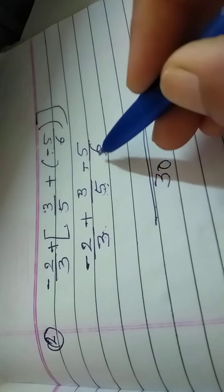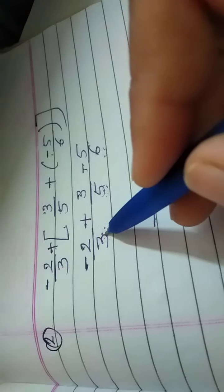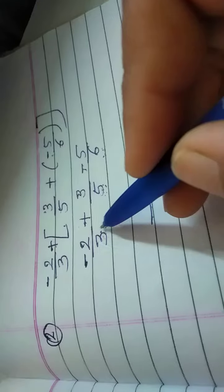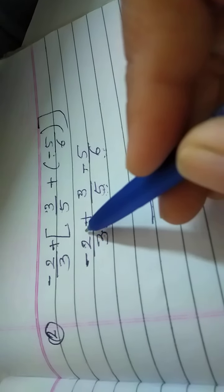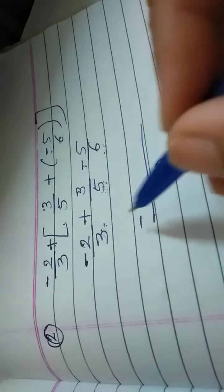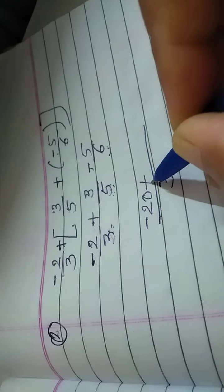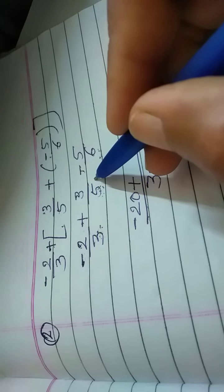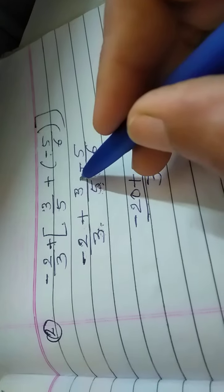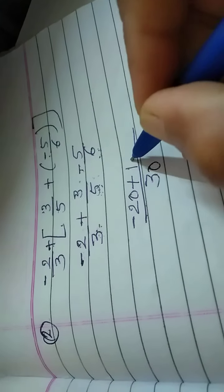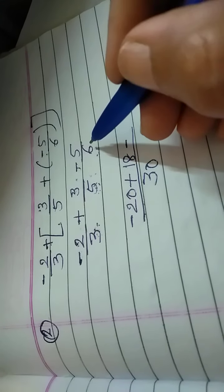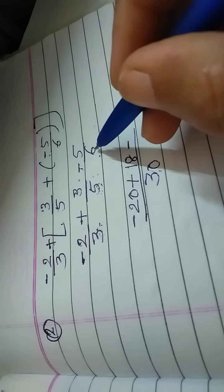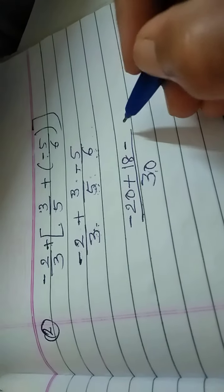We need all rational numbers with denominator 30. To make 3 into 30 we multiply by 10, so we also multiply minus 2 by 10 to get minus 20. Then for the denominator 5, we multiply 6 in 5 to get 30, so we also multiply 6 in 3 to get 18. Here it is minus sign so we put minus sign. For the denominator 6, we multiply 5 in 6 to get 30, so we multiply 5 in 5 to get 25.